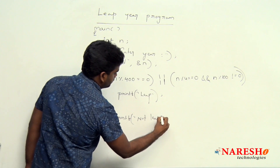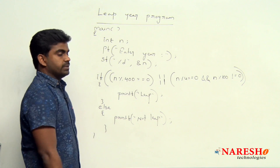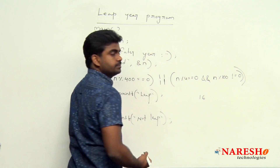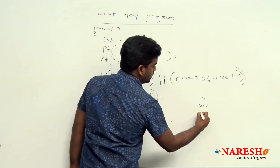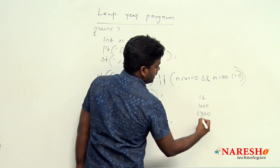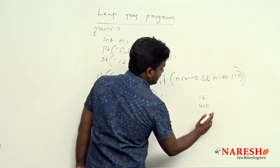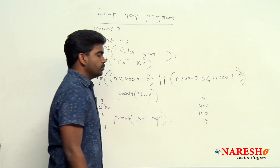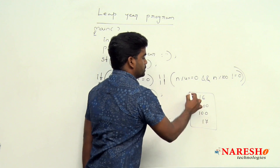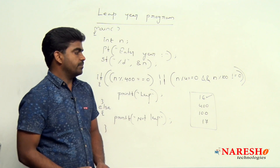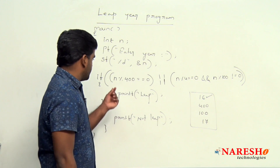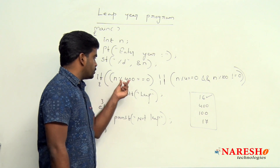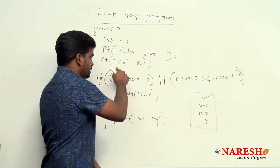To understand this, let's trace through four input values: 16, 400, 100, and 17. First, checking 16: 16 % 400 == 0 is false, because 16 is not divisible by 400. So this condition fails.